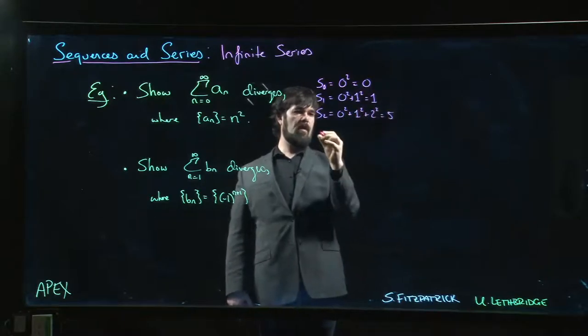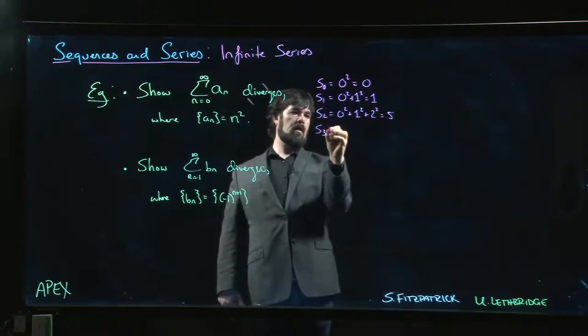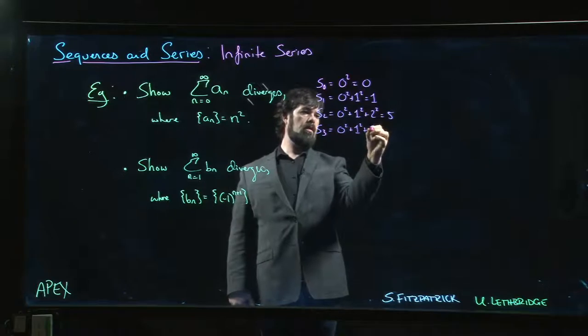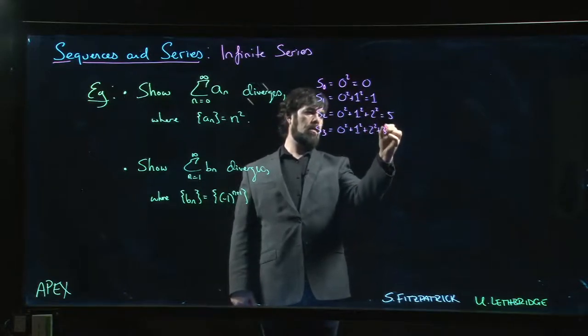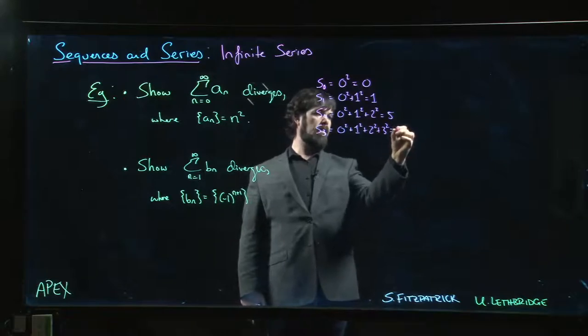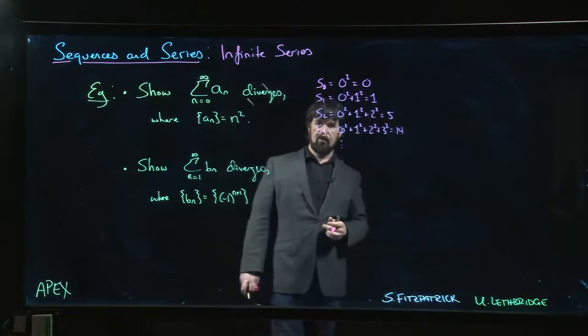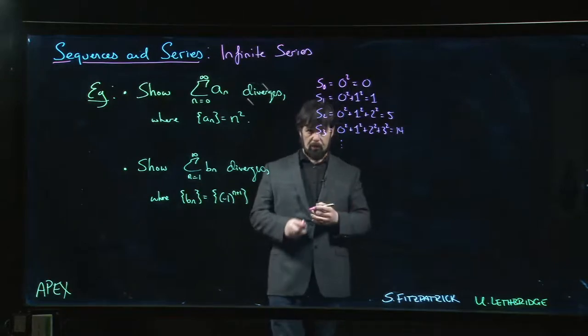s3 is zero squared plus one squared plus two squared plus three squared, which is 14, and so on. It certainly seems like those partial sums are going to keep growing and growing.